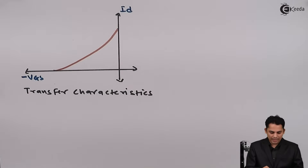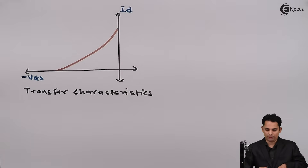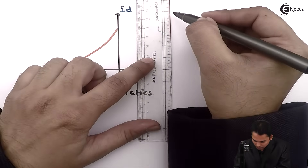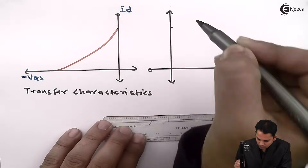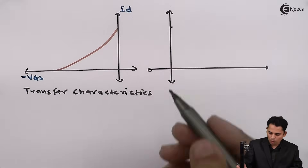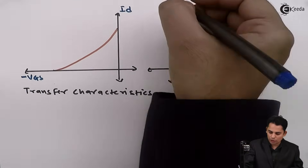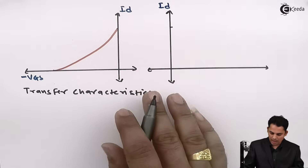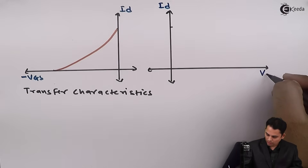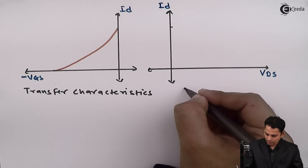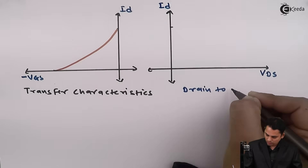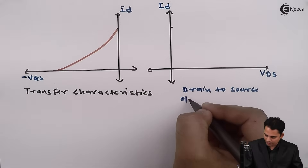The second characteristics is the drain-to-source output characteristics. On the Y-axis it consists of drain current ID, and on the X-axis it consists of output voltage VDS. It is called output characteristics because it is a graph of output current ID versus output voltage VDS.